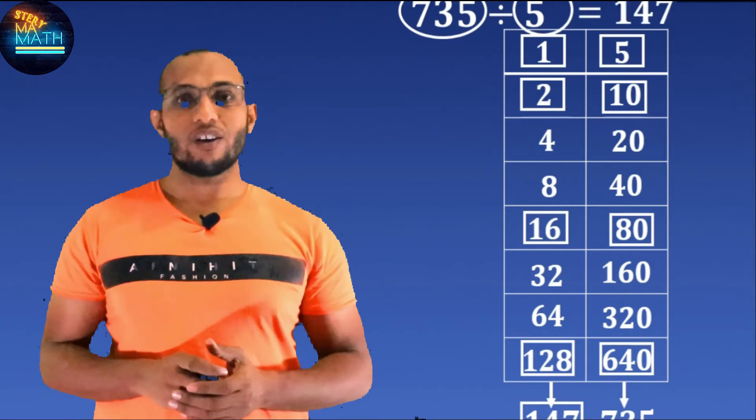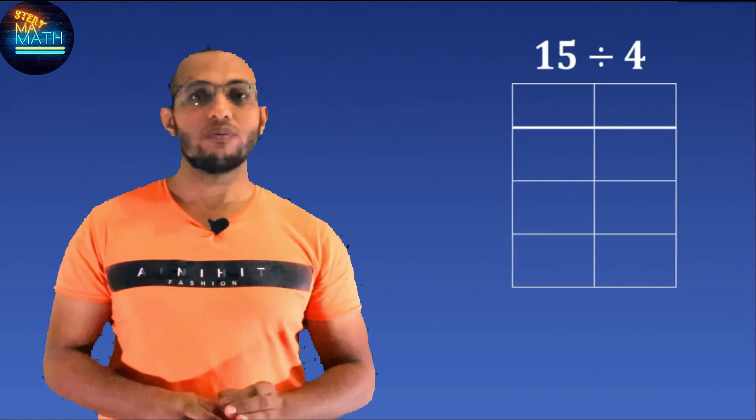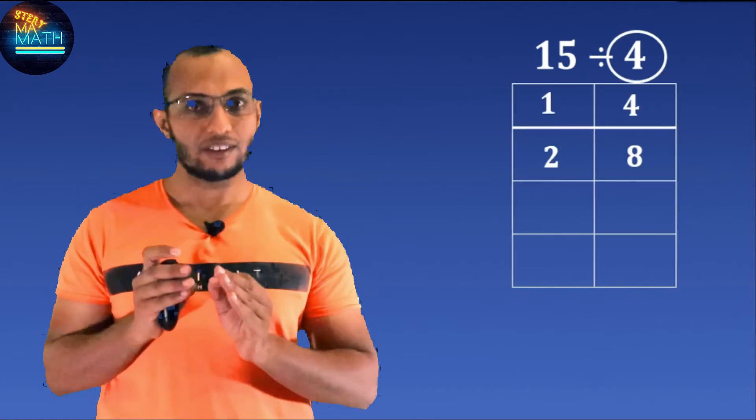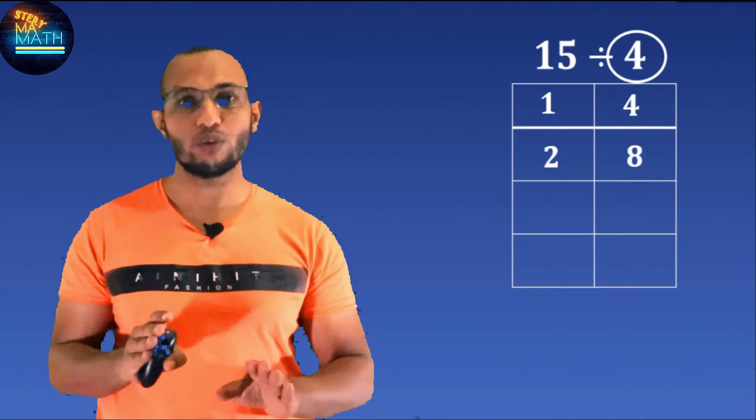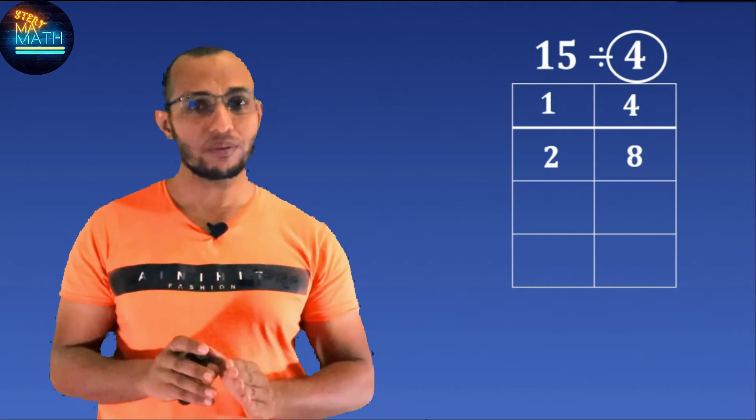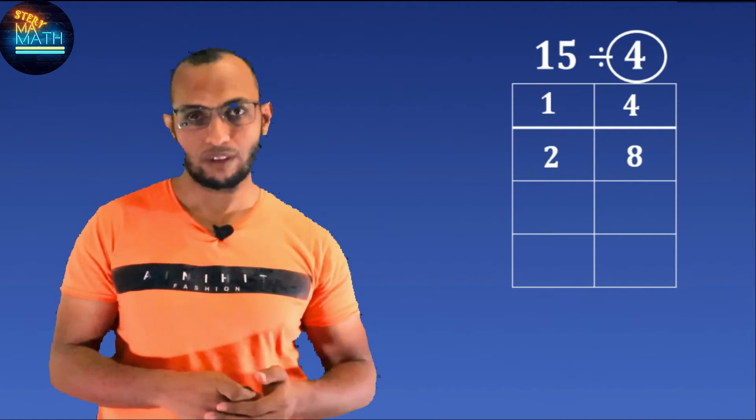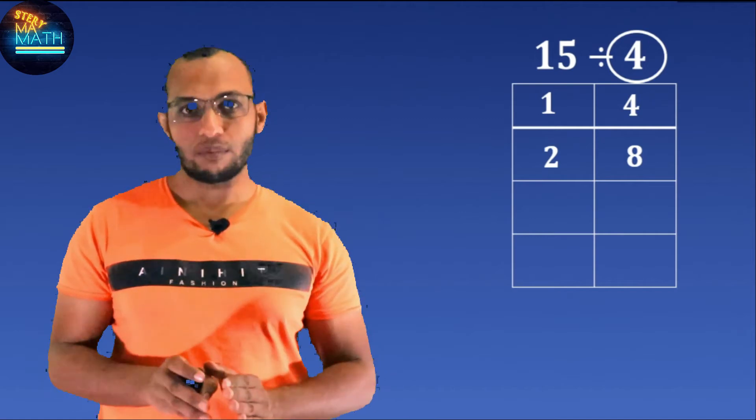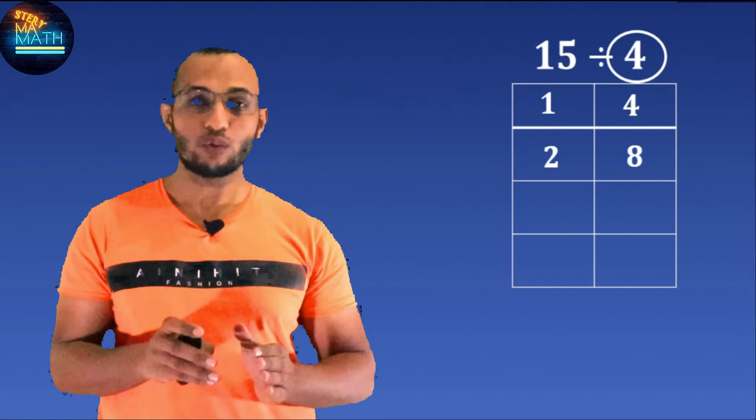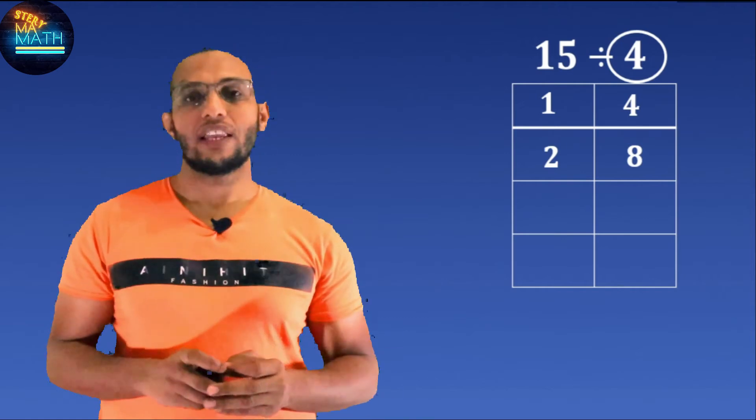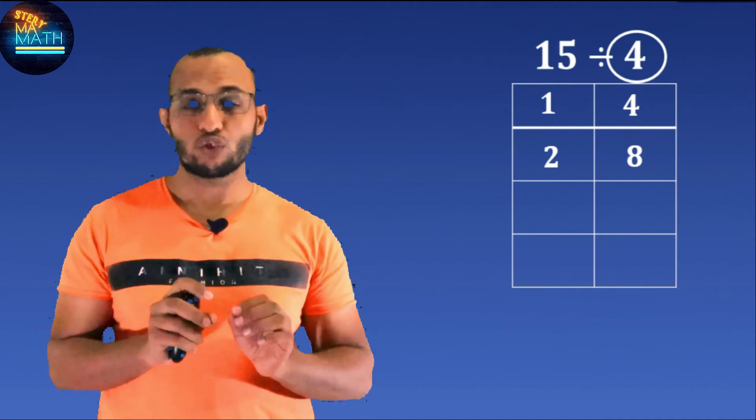I know that you are wondering if that method works with fractions or not. Let's see. In this example, double the first row to get 8 and 2, and don't try to double anymore because if you doubled it, you get 16, which is larger than 15. At the same time, if you added 4 and 8, you get 12. There are only 3 left. Now it's time for the fractions.